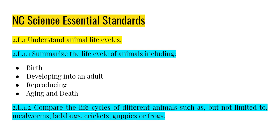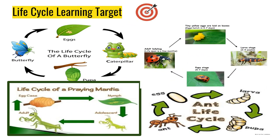We will still be covering our essential standard to summarize the life cycle of animals including birth, developing into an adult, reproducing, aging, and death. Today, our learning target will be the life cycle of a praying mantis.